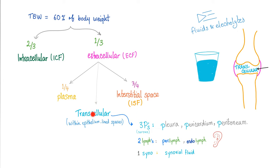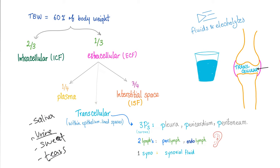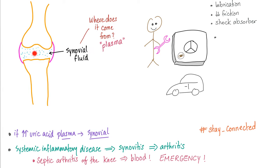Where does the transcellular fluid come from? Of course it comes from the plasma. What does urine come from? From the plasma. How about sweat? Sweat comes from the plasma. How about your precious crocodile tears? Of course they come from the plasma. Any fluid secretion comes from the plasma. Here is a joint, here is a synovial fluid — where did it come from? Of course from the plasma.